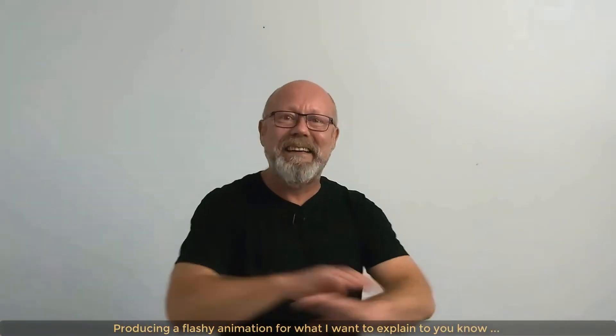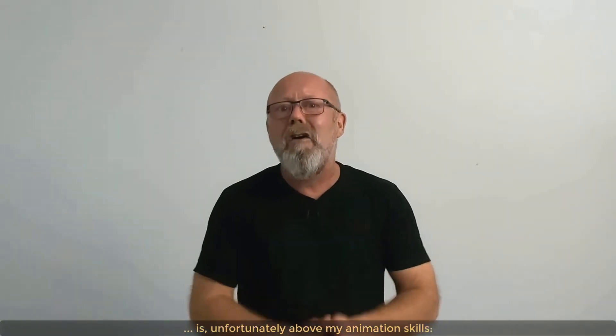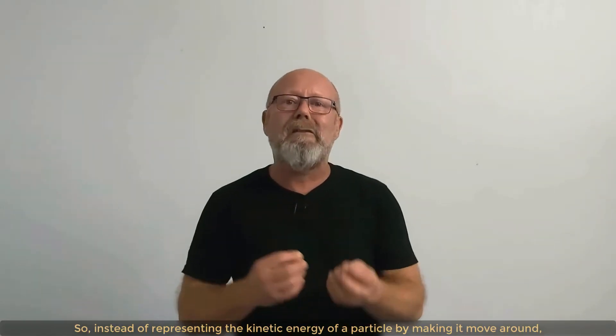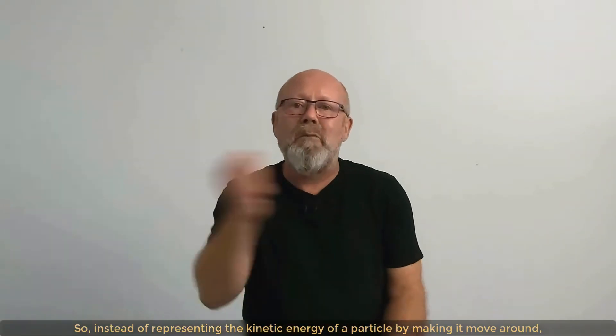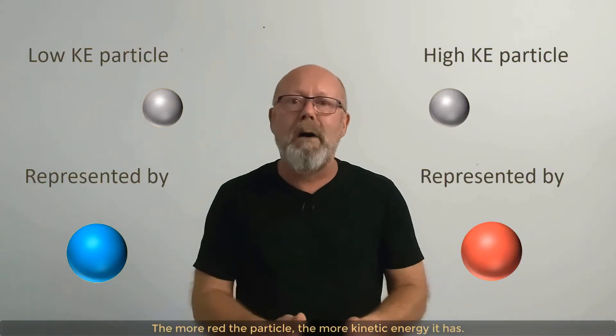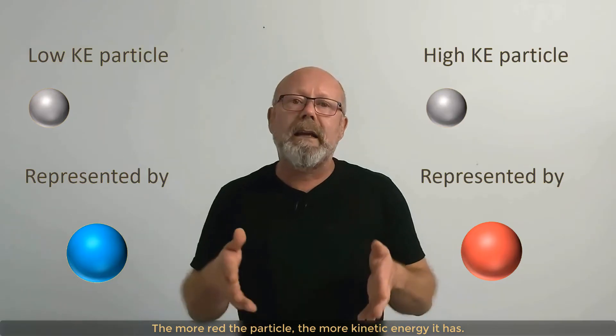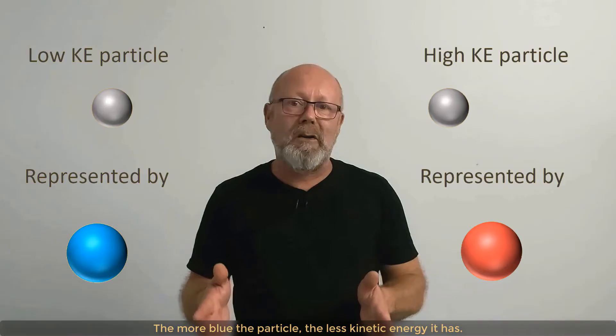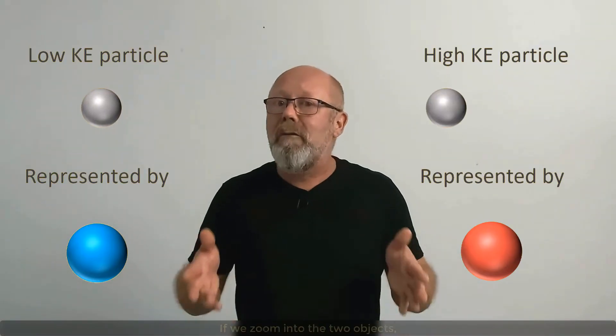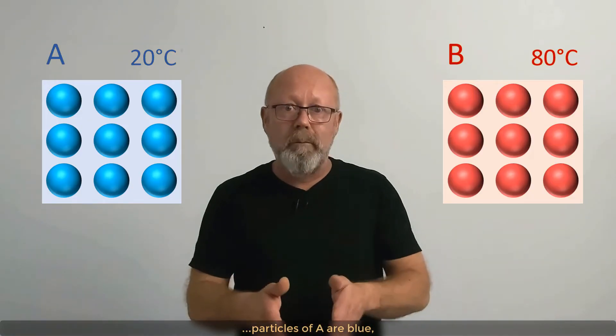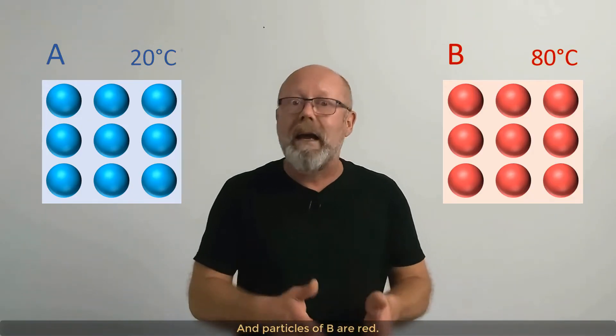Producing a flashy animation for what I want to explain to you now is unfortunately above my animation skills. So, instead of representing the kinetic energy of a particle by making it move around, I will use color. The more red the particle, the more kinetic energy it has. The more blue the particle, the less kinetic energy it has. So, if we zoom into the two objects, particles of A are blue, and particles of B are red.